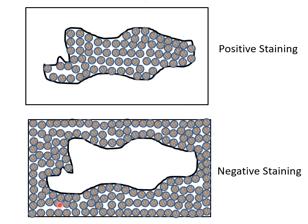In negative staining the biological molecule appears bright while the background appears dark. In positive staining, the background has no stain material so electrons pass through uninterrupted and appear bright on the fluorescent screen, whereas the molecule blocks electrons and appears dark. So negative stain gives a bright image of the protein and positive stain gives a dark image — there is a phase reversal when moving from positive stain to negative stain.